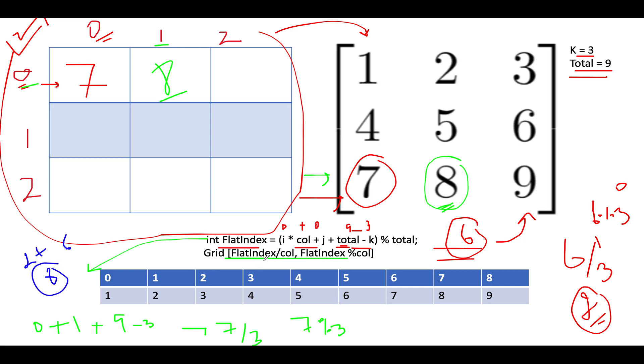And let's apply this formula. Flat index by column gives you 2. That means you should look out for the second row. And flat index modulus gives you 2. Therefore we should look out for this element which is 2, 2. And this gets added over here.